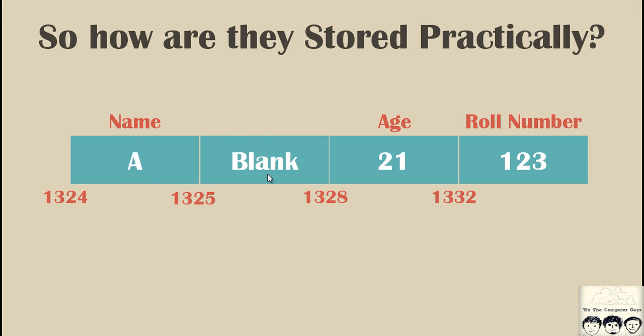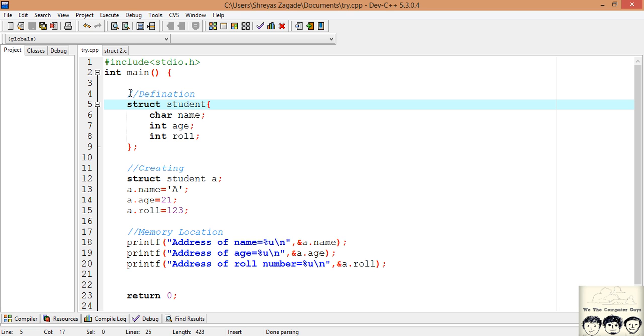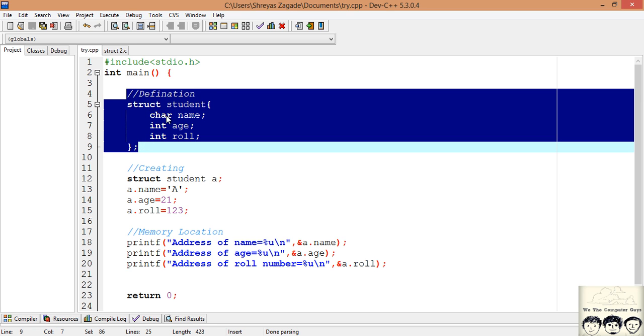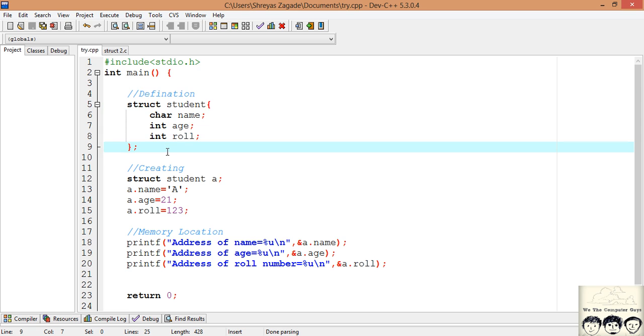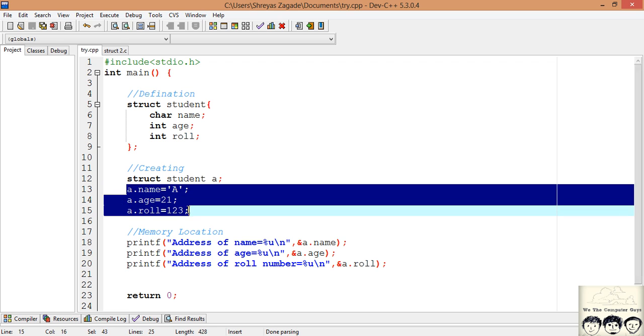Now I am just going to prove to you by executing the program and showing you that this is how it is actually stored. I have already written down the program. First we define a structure, student, having a character name, integer age, and roll number as an integer. Then we create a structure variable 'a' and we assign the properties some value. This is another technique of assigning values to properties, that is you individually assign each property a certain value.